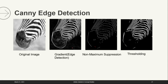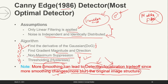Now you can see the Canny edge detection with an example. This is our original image. We are just computing the gradient, and you can see we are getting very good edges. But the only drawback is that we are getting thick edges. Thick edges means there are more than one pixel in the edge. Edge should be consisting of only single pixels — it should be thin. For that purpose, our non-maximum suppression is used, which was step number 3.